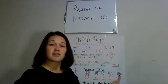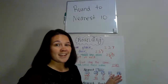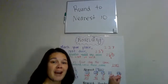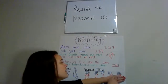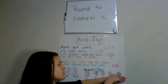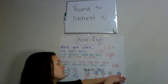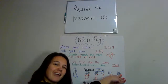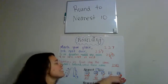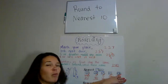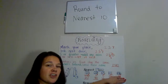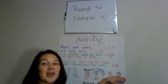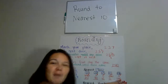Lastly, we have 136. Don't let it trick you — just because there are three numbers, we're still rounding to the tens place. So we find the tens place, which is a three, then we look next door at the six. Is that five or bigger? Yes. So we're going to add one more. 136 rounds up to 140. Great job.